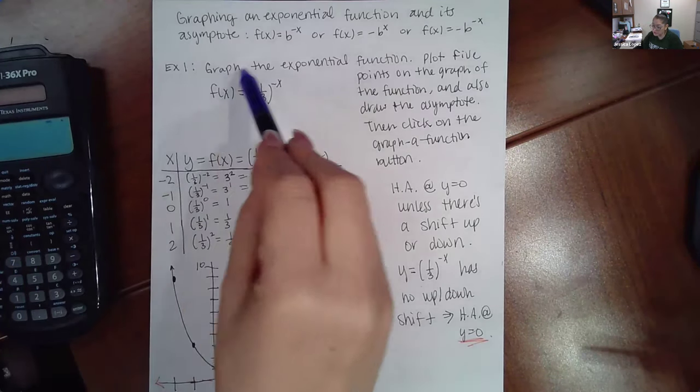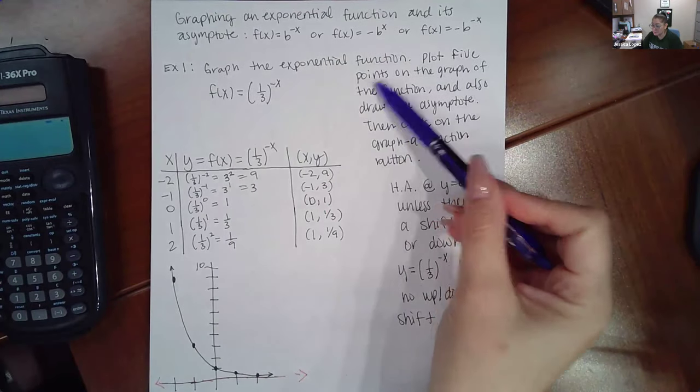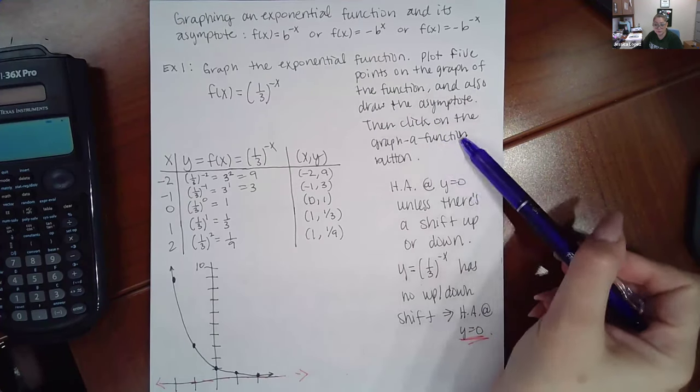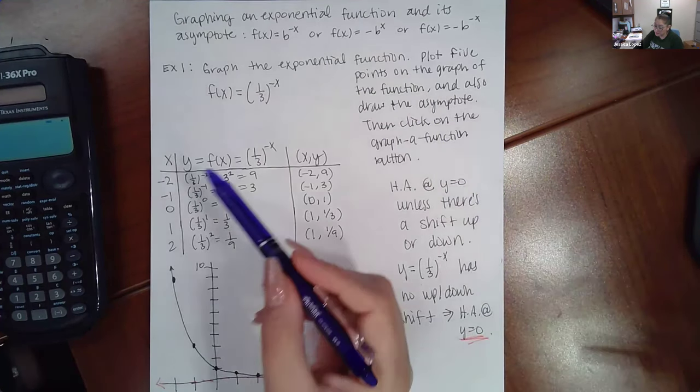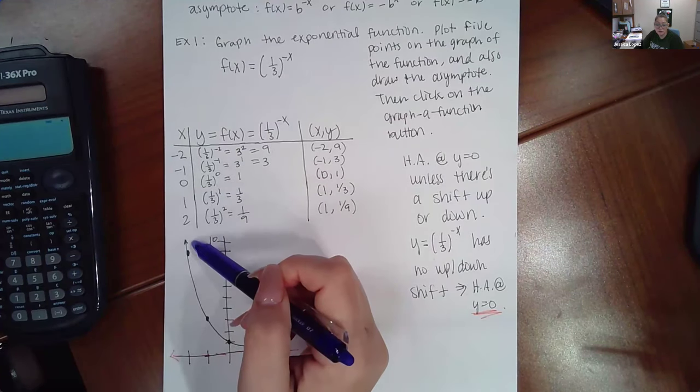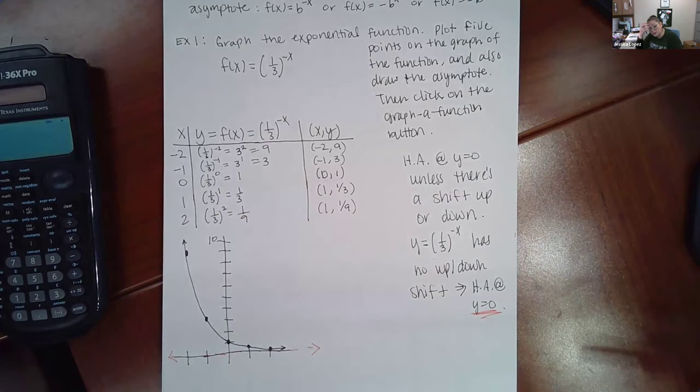The directions say graph the exponential function, plot five points this time, and also draw the asymptote, then click on the graph function button. So here we want five, so I just use the standard negative two to two. Basically you have zero and you have two points on the left and then two points on the right in the number line.